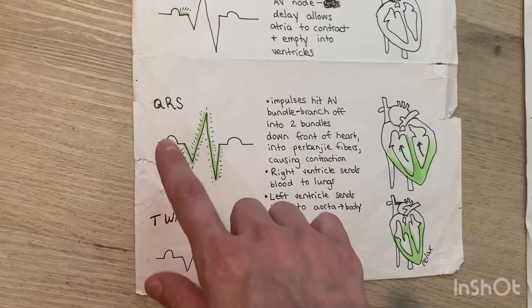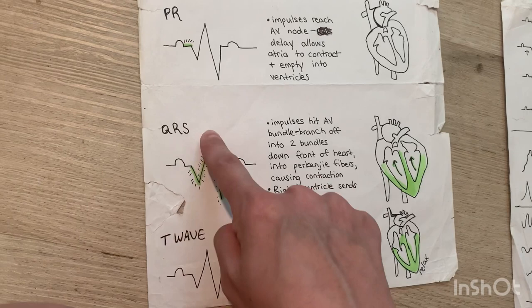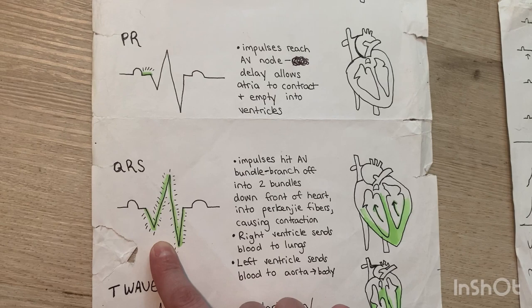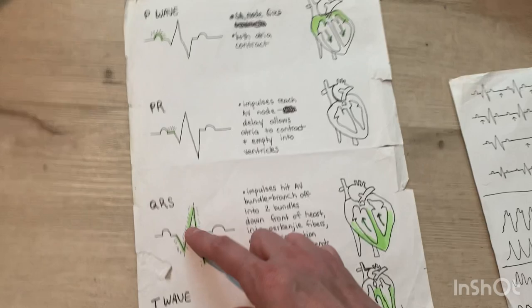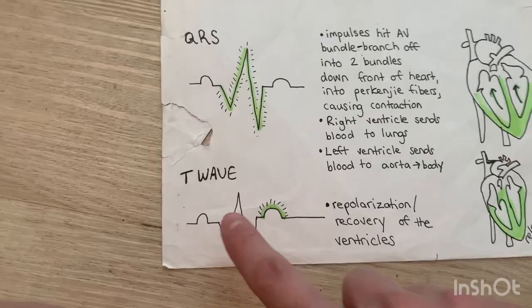The QRS — this is the big kahuna if you're from Ben Clark. In a nutshell, this is ventricular contraction. The right ventricle is sending blood to the lungs, and the left ventricle is sending blood from the aorta to the body. Associate this big spike with the big kahuna ventricles.